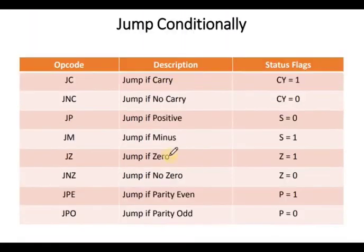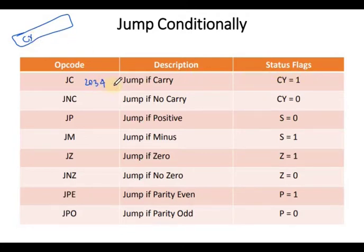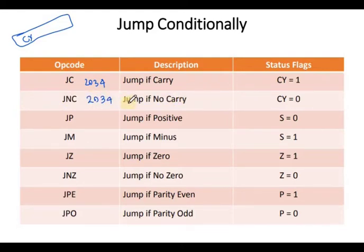For example, JC 2034 — JMP if carry flag is equal to 1. And JNC 2034 — JMP if no carry, that means JMP if carry flag is zero.